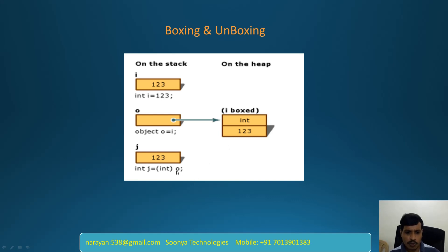Here, object o is assigned to integer j. We need to convert explicitly. The object contains integer type, so we need to convert to integer using parentheses. Inside parentheses, we need to mention integer. This is boxing — converting value type to object type. This is unboxing — extracting value type from object.